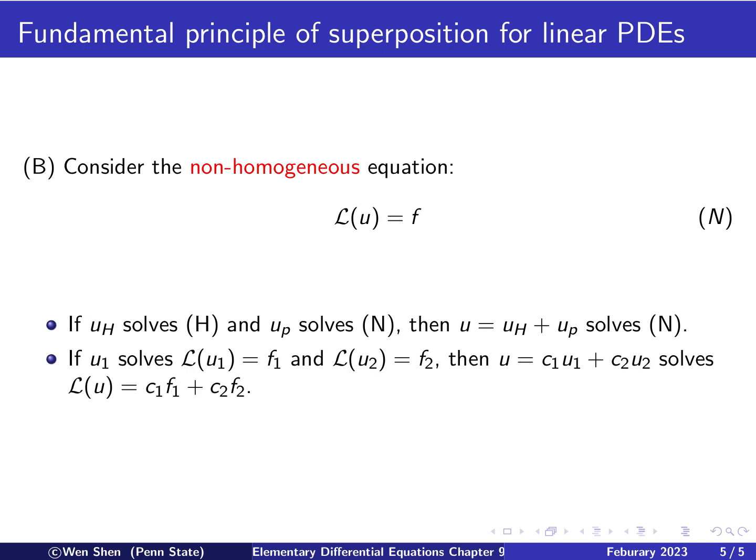Second half of this would be if you have a solution u1 that solves the non-homogeneous equation with F1 on the right-hand side, and then u2 solves the equation with F2 on the right-hand side. Then a linear combination of these two functions will solve the equation where the right-hand side is the same linear combination of F1 and F2.